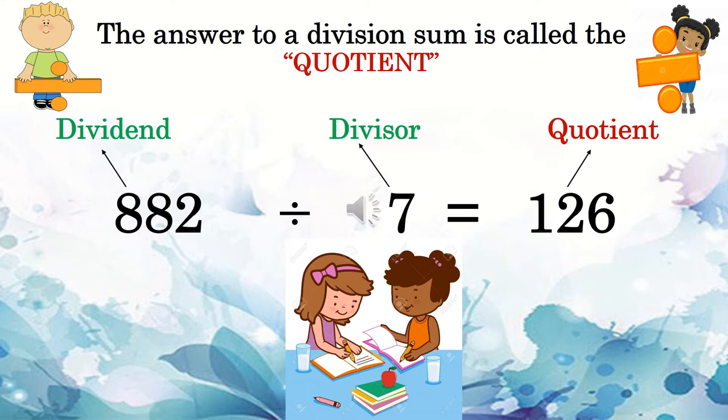When I say it is the product of, you know that it is the answer to a multiplication sum. But when I say quotient, what do you understand? It is the answer to a division sum.